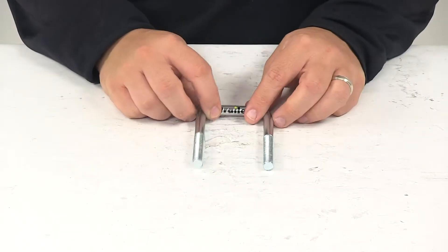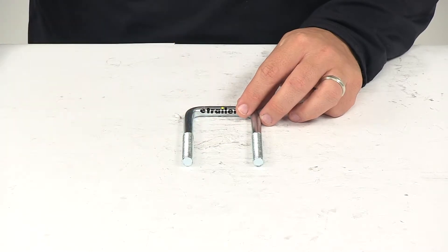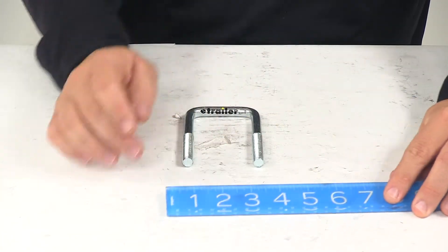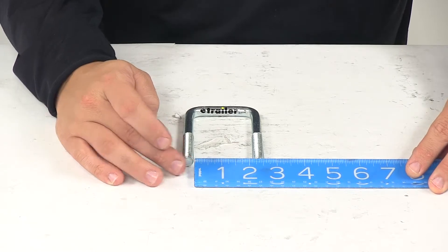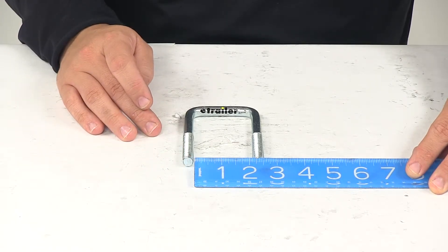It is designed for two inch wide axles. We can tell that by taking a measurement from inside edge to inside edge. This measures around two and one eighth inches, so it's perfect for a two inch wide axle.